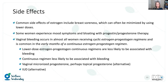Common side effects with estrogen include breast soreness, which can often be minimized by lowering the dose. Some women experience mood symptoms and bloating with progestins or progesterone — again, lowering the dose can help. Vaginal bleeding occurs in almost all women on a cyclical estrogen-progestogen regimen and sometimes early in a continuous regimen. You can drop the dose to see if that stops it; a continuous regimen is less likely to cause breakthrough bleeding. If it's a persistent problem affecting quality of life, you can move to other therapies.